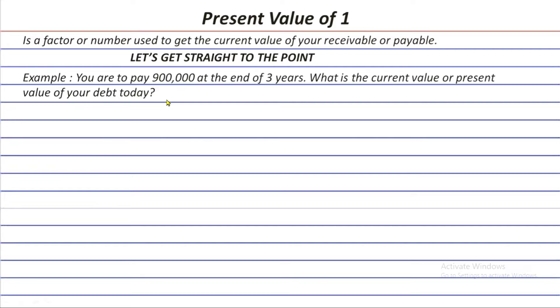You cannot say 900,000 because logically, we know that money grows, right? And if your liability is 900,000 at the end of 3 years in the future, then that means today, your liability should be smaller.